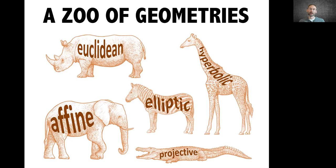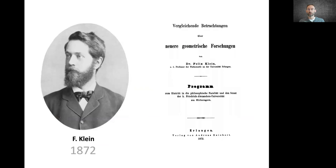An answer to this question was given by a young German mathematician called Felix Klein, who in 1872 was appointed as professor at the Bavarian University of Erlangen.